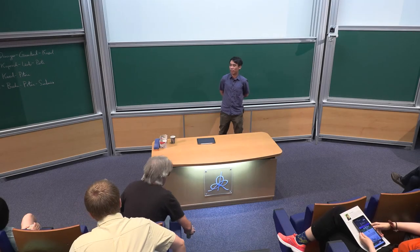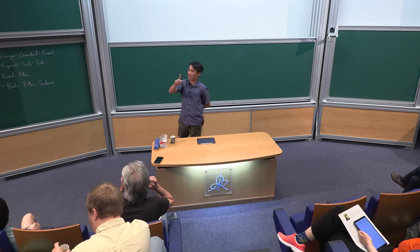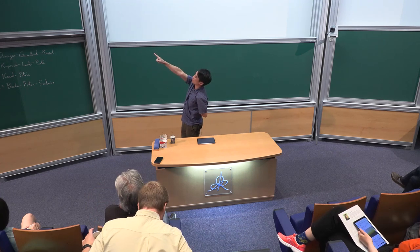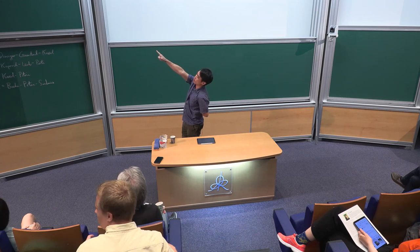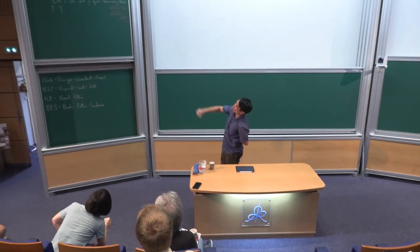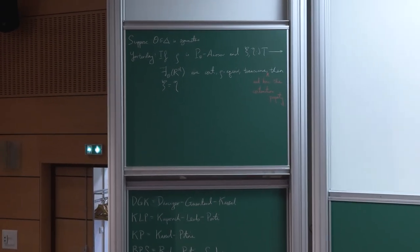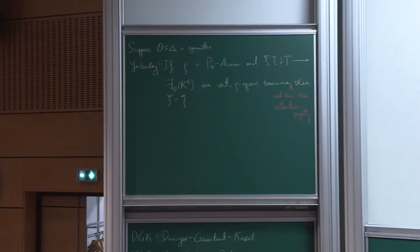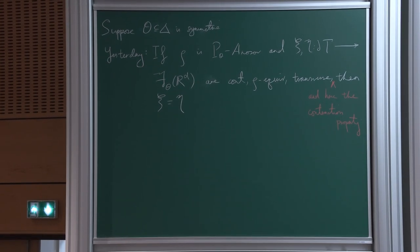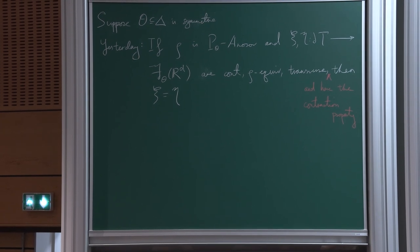Let me remind you of a mistake I made last time. I claimed that if you have a p-data non-self-representation and two row-equivalent continuous transverse maps, then you have to agree — you have to assume the contraction property. In the definition of a non-self representation, you have the second contraction property; you have to assume that for this to be true.